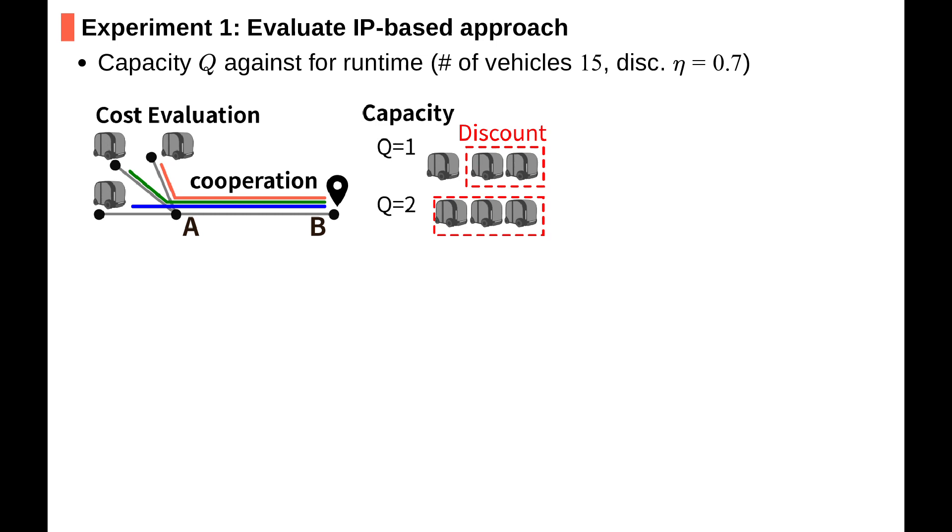Therefore, the three vehicles are divided into two groups. If Q equals two, in contrast, the three vehicles are regarded as one group in the evaluation, so they can reduce the total travel cost more. Now we evaluate Q against the runtime and the figure shows the mean runtimes. From the results we conjecture that smaller Q requires more runtime.